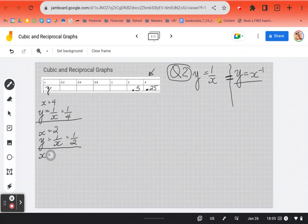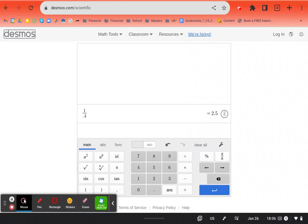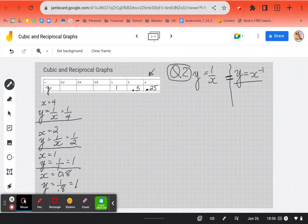When x is equal to one, y is equal to one over one, which is equal to one. Now, if you don't feel comfortable dividing decimals, that's okay, that's why you have a calculator. If x is 0.8, y is equal to one over 0.8. Jump to your scientific calculator, so you say one divided by 0.8, which is 1.25.